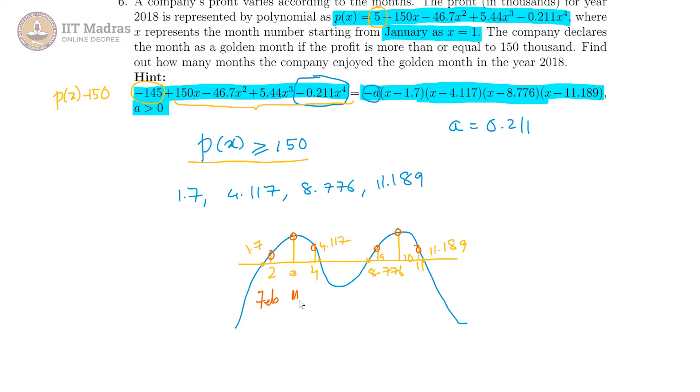It is Feb, March and April and here this is September, October and November. So 6 months are the golden months in that year for this company.